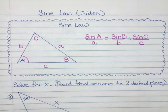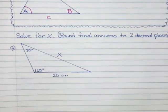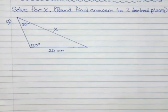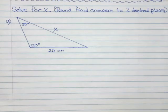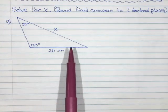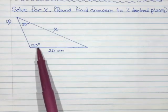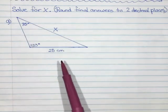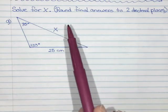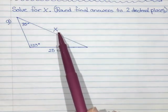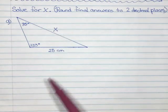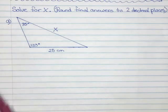The best thing to do is try an example. We have two questions to try together. The first says solve for x and round final answers to two decimal places. Looking at this triangle, there's an angle of 120 degrees, an angle of 35 degrees, a side of 25, and this side is what we want to find. It doesn't have a right angle, so I cannot use Pythagorean theorem or SOHCAHTOA.